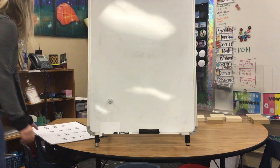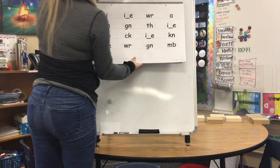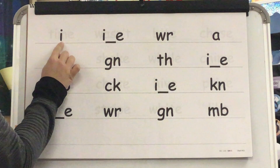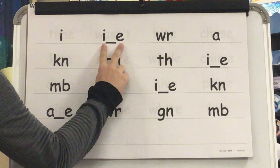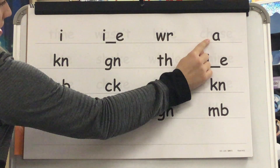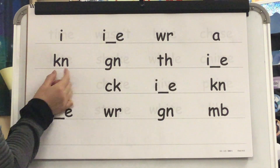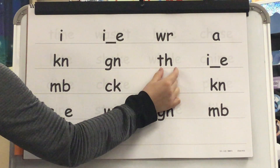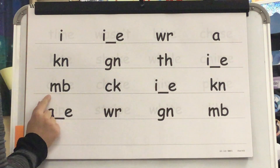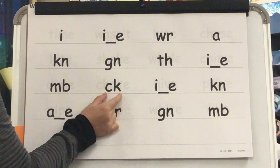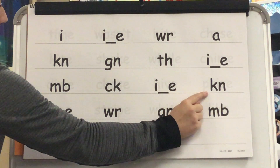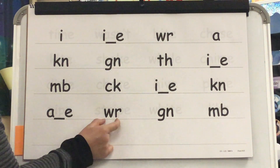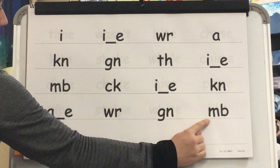Let's practice our sound spellings. Sound: I. Sound: R. Sound: A. Sound: N. Sound: A. Sound: R. Sound: N. Sound: M.